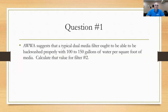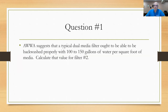Question number one: AWWA suggests that a typical dual media filter ought to be backwashed using somewhere between 100 and 150 gallons of water for every square foot of the filter. If we know how many square feet we have and divide that into the gallons used, it should come out to somewhere between 100 and 150. That's a good operational value — if operators are using too little or too much water, this value will tell you. The question asks us to calculate that value for filter number two.